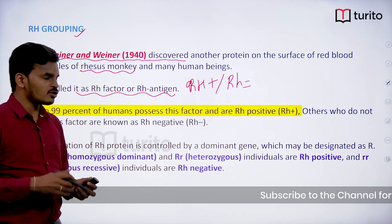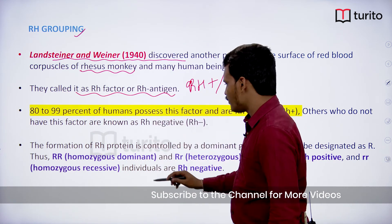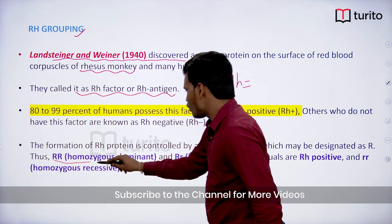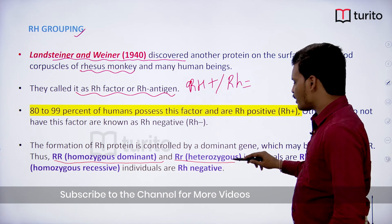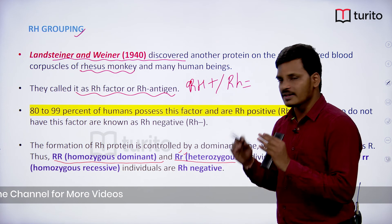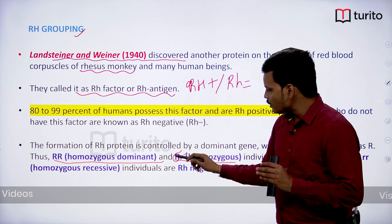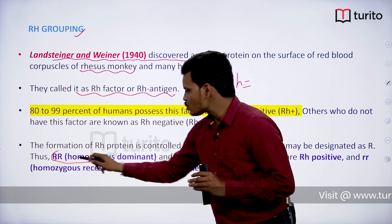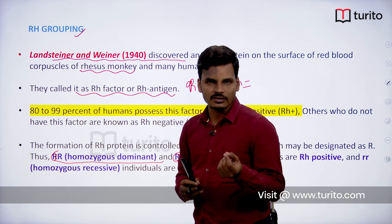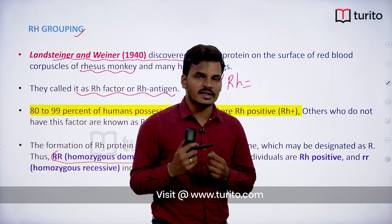The formation of the RH factor is controlled by a dominant gene. If the genotype is capital R capital R — homozygous dominant — or capital R small r — heterozygous — both cases have at least one dominant allele and are RH positive. If both alleles are recessive — small r small r — that is homozygous recessive and the person will be RH negative.